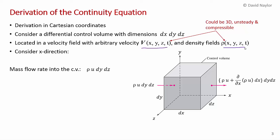We start by considering the mass flow rate into this differential control volume in the x direction. Mass flow rate is rho times velocity times area. So we have density times the velocity in the x direction times the area — dy dz is the area of this face. That's the mass flow rate in.